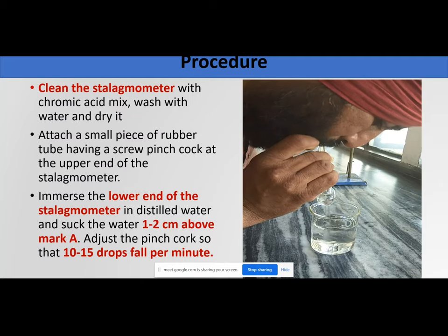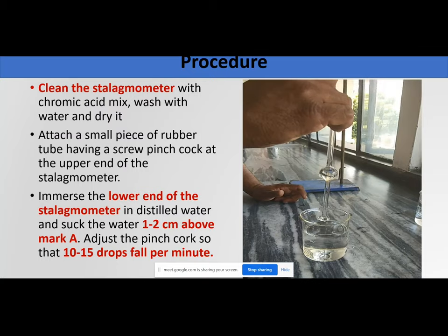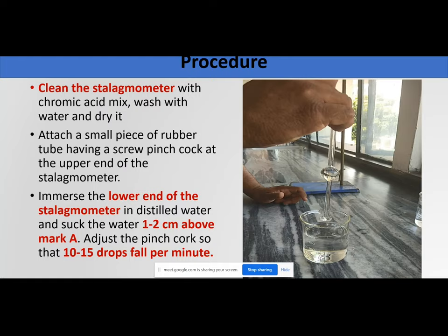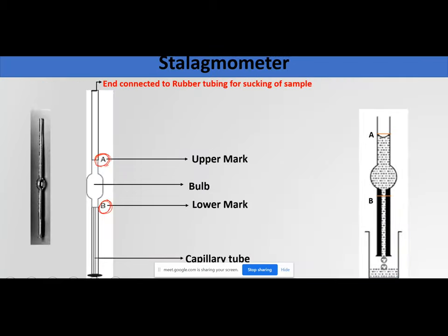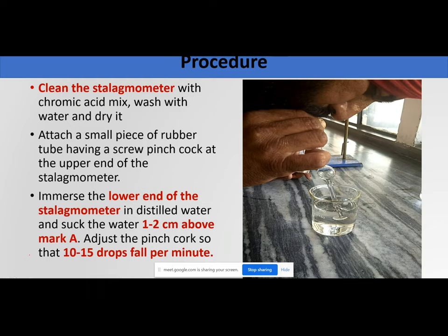Immerse the lower end of the stalagmometer in distilled water and suck the water 1–2 cm above mark A. If using a pinch cock, adjust it so drops fall at a rate of 10–15 drops per unit time, giving sufficient time for each drop to attain its maximum surface area.